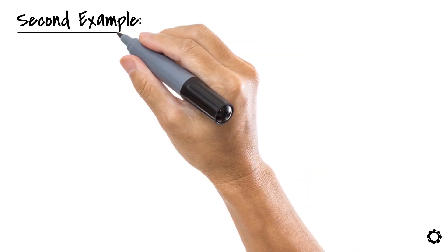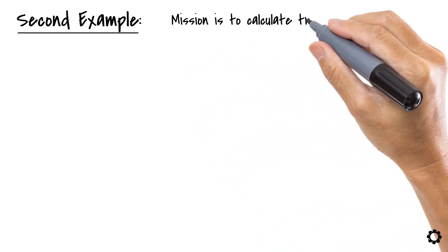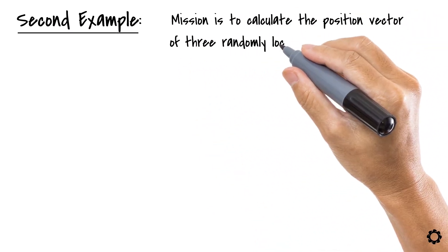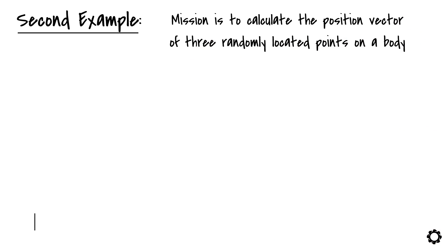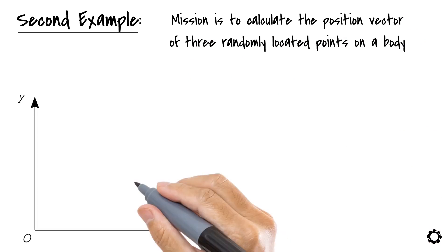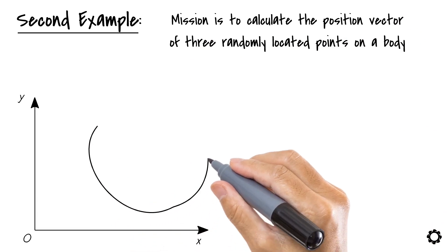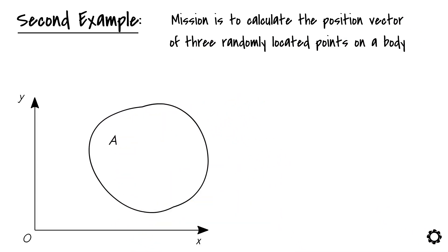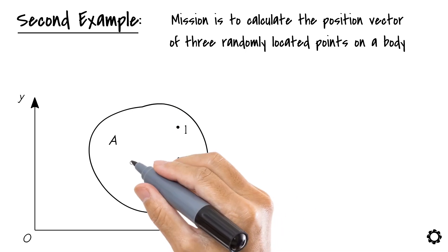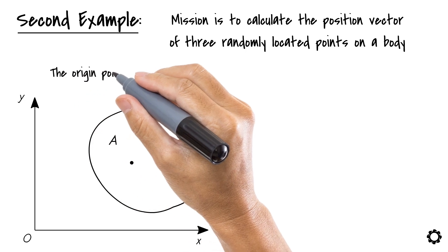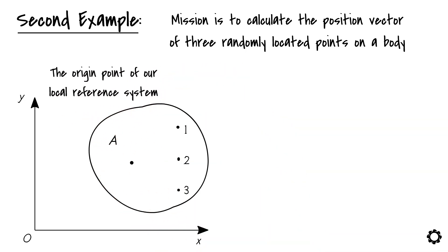Remember, I mentioned we would present two examples? In this case, our mission is to calculate the position vector of three randomly located points on a body. Let's bring a fresh new coordinate system, pretty similar to the one we have just used, and let's fill it with a really weird looking body. We will call it body A. Let's also draw on the body three points. But here comes a little twist. I will draw a fourth point that we will call the origin point of our local reference system attached to the body.